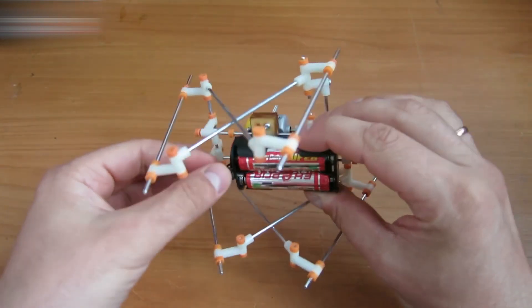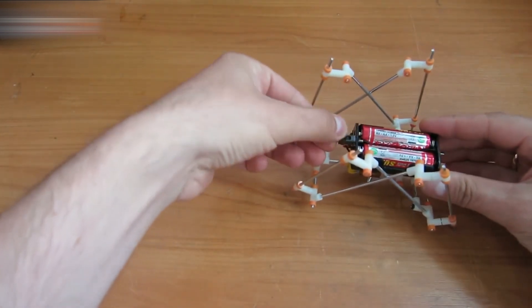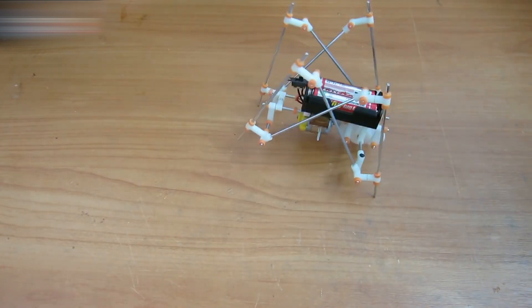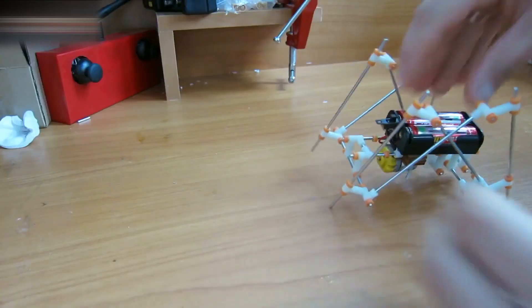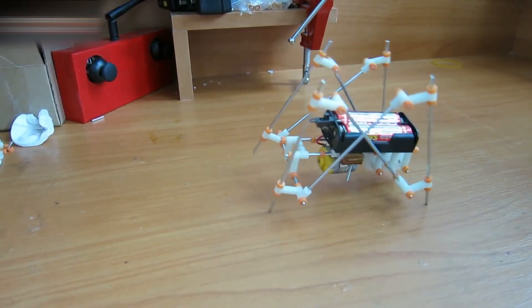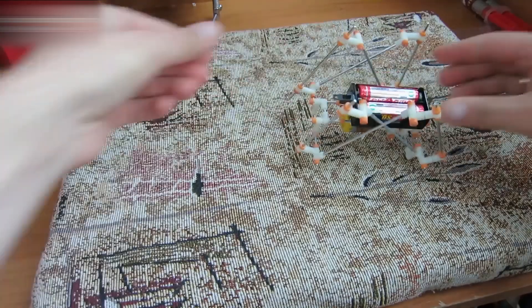This is how the robot should look. Turn it on. It slides on this surface. Let's try it on a carpet. Now it's walking better.